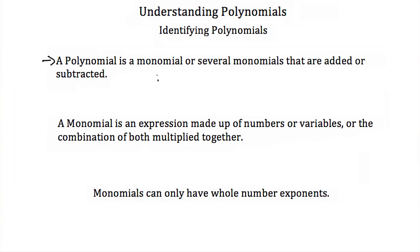What's a monomial? A monomial is an expression made up of numbers or variables, or the combination of both multiplied together. A monomial can only have whole number exponents. So 7 would be a monomial, and 3x squared would be a monomial, and 99x to the 120 would be a monomial.